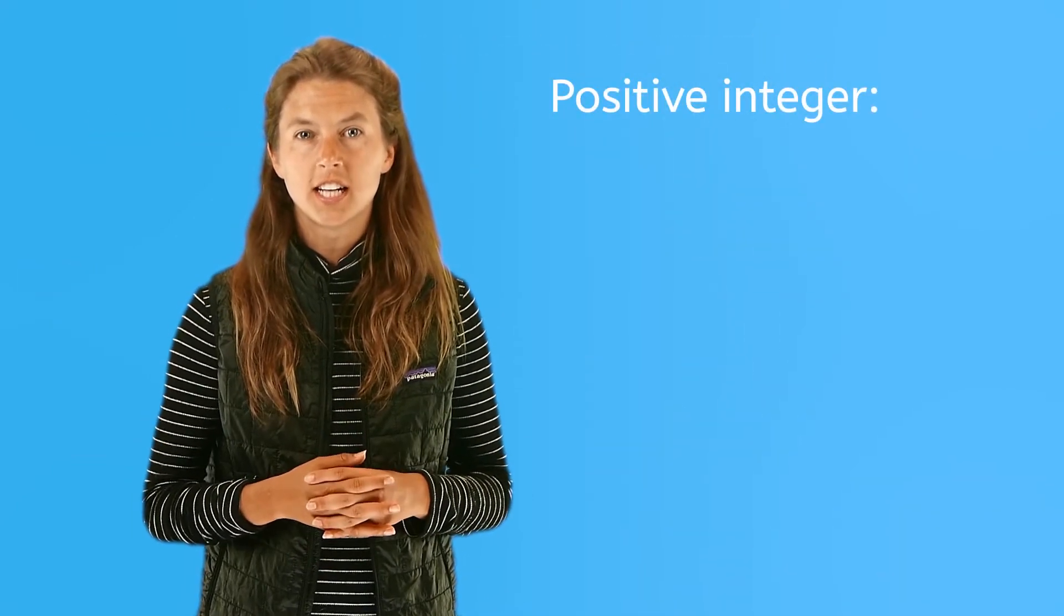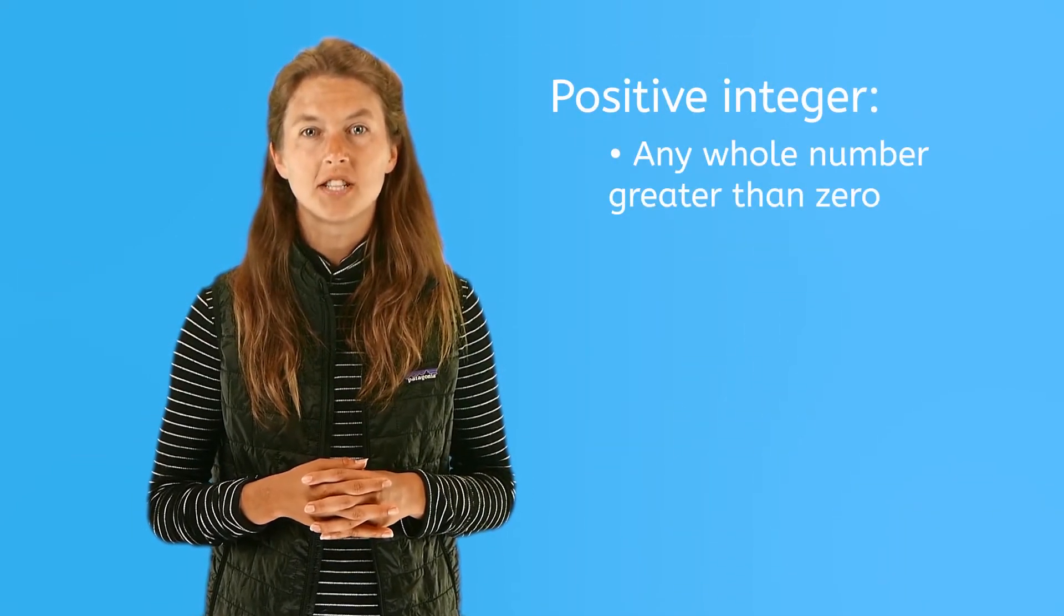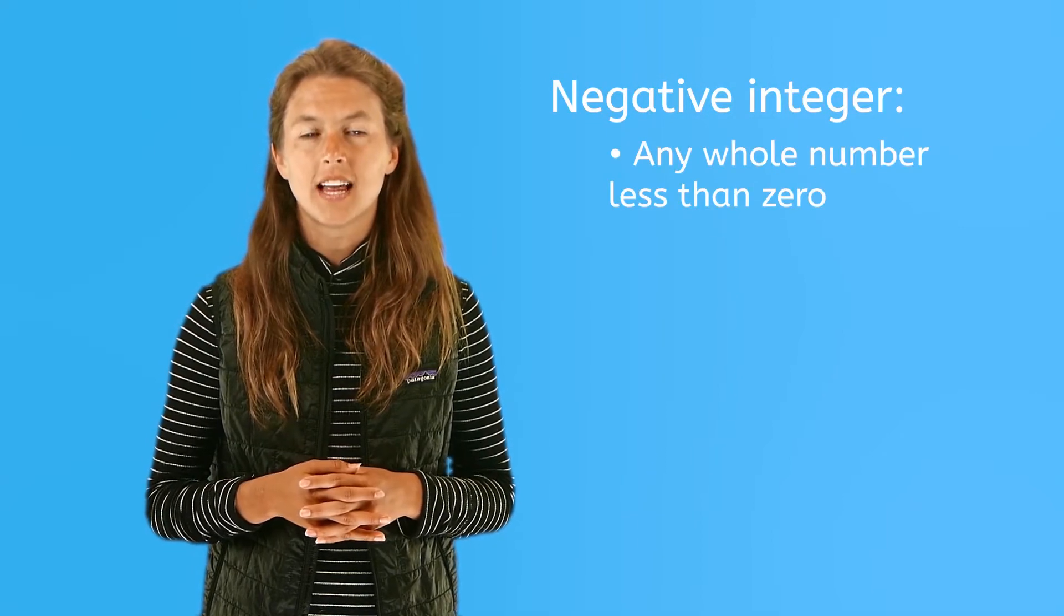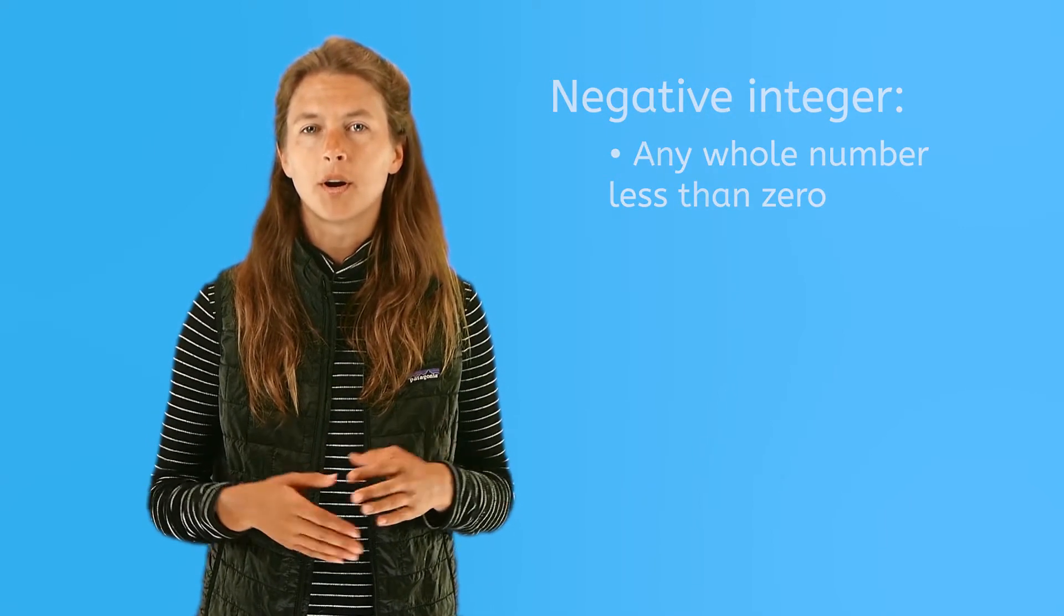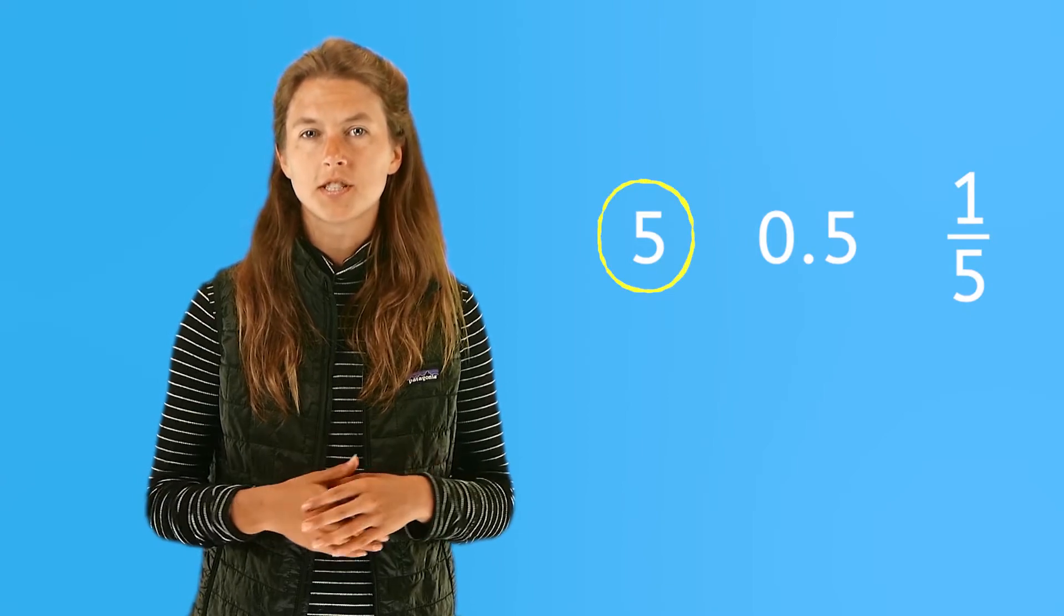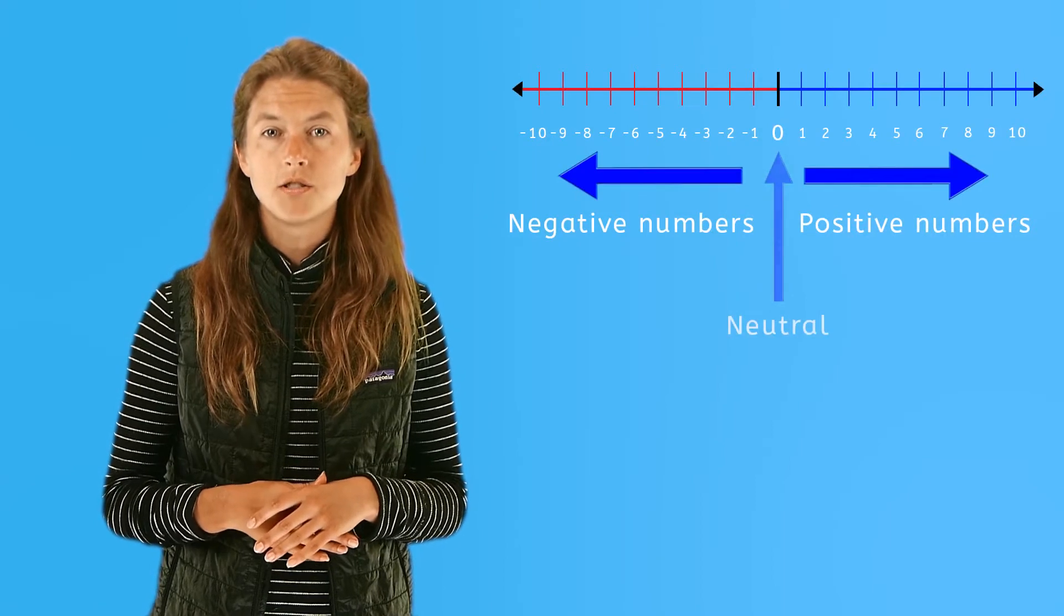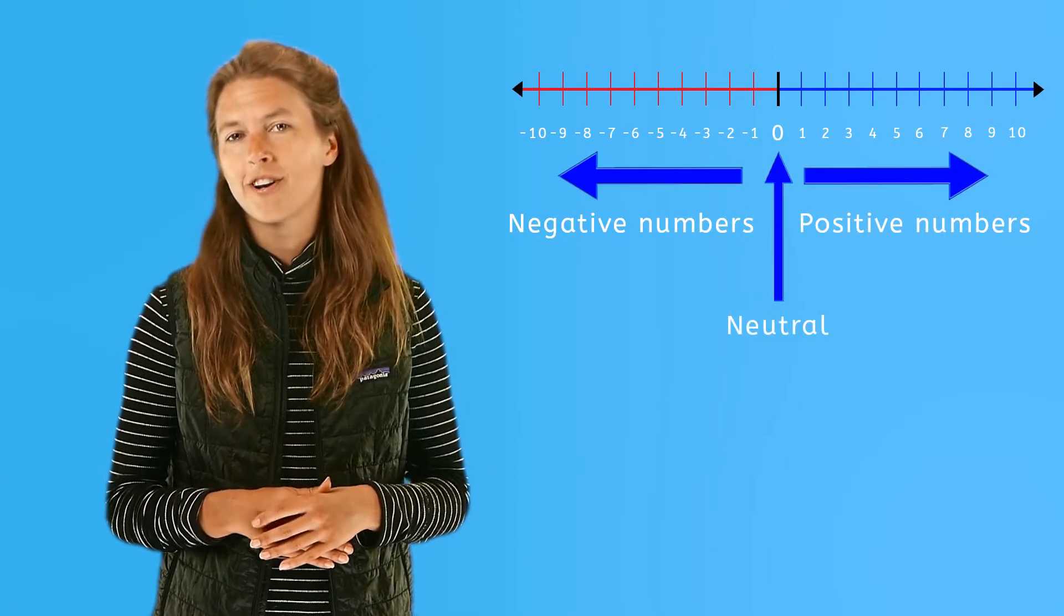A positive integer is any whole number greater than zero. A negative number is any number less than zero. Remember, whole numbers, or integers, are numbers without fractions or decimals. By the way, zero is neutral and is neither positive nor negative.